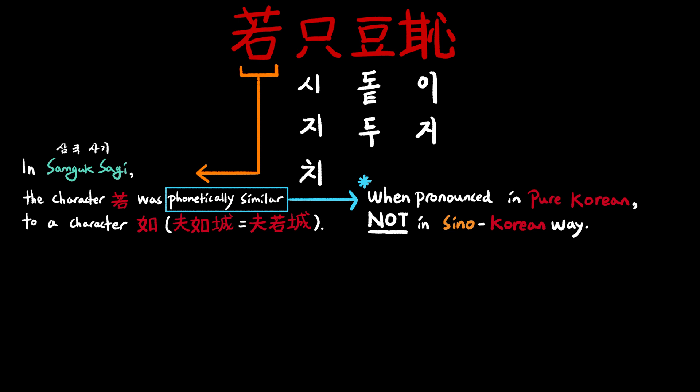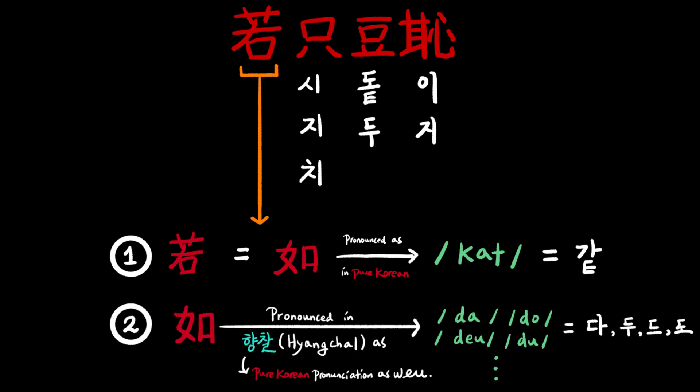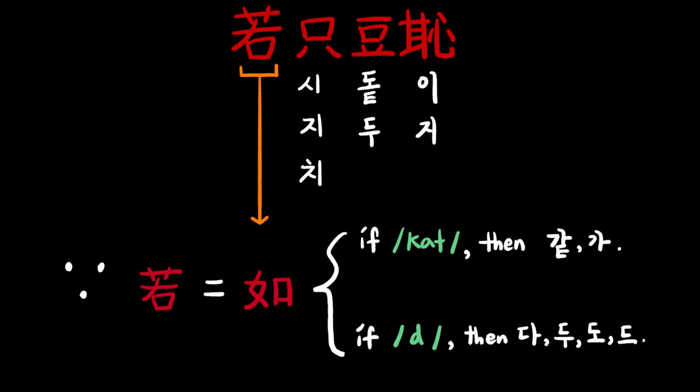Therefore, it is necessary to look at the variations in pure Korean pronunciation of a single Hanja character. Having said that, these two characters are replaceable, meaning they can be used interchangeably. One pronunciation is GAT. Another pronunciation, which can be gleaned from Hyangchao — basically another way of saying pure Korean pronunciation — is DA, DO, or DU. Let's simplify as GA and DU.